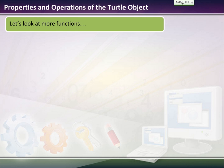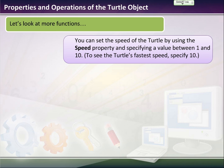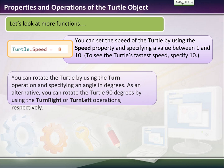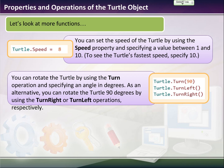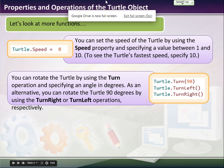So, let's look at more functions. You can set the speed of the turtle from 0 to 10, where 10 is the fastest. So, you would just say turtle.speed equals 1 to 10. You can rotate the turtle by using the turn operation. You can turn right or turn left. If you say turn right or turn left, it just automatically turns to the left 90 degrees or turns right. If you just use turn, it automatically turns clockwise. Otherwise, the top of the screen would be 0 degrees, 90 degrees would be to the right, 180 degrees, 270, and 360.